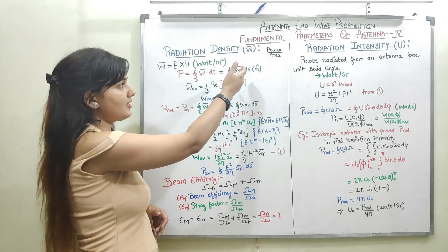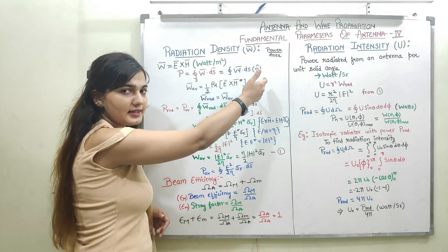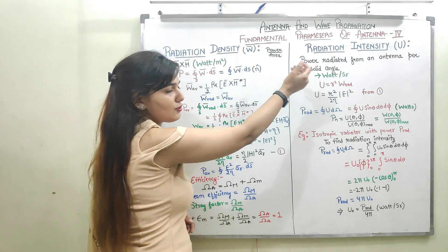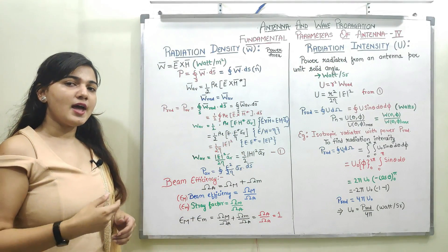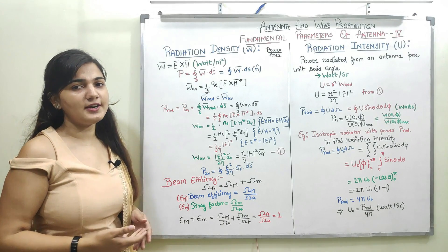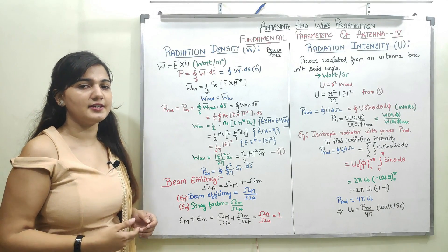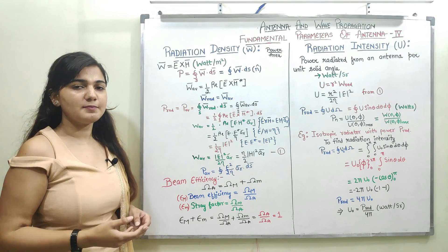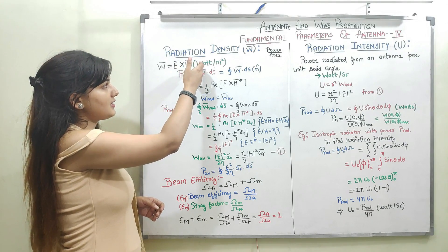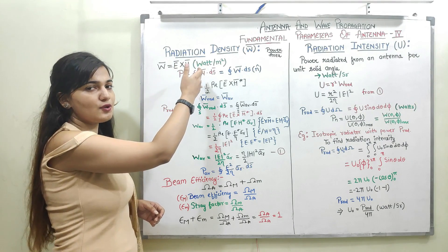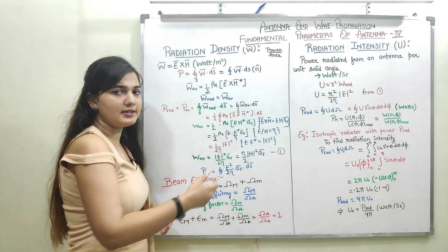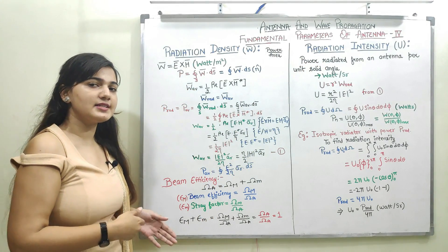Radiation density is power per unit area, whereas radiation intensity is power per unit solid angle. Area is represented in terms of meter square, solid angle is represented in terms of steradian, and power is represented in terms of watt. So radiation density is expressed in terms of watt per meter square and radiation intensity is expressed in terms of watt per steradian.